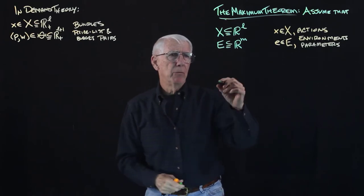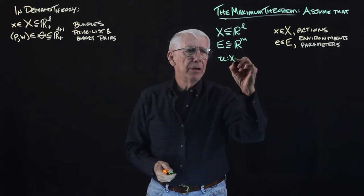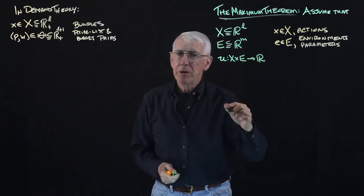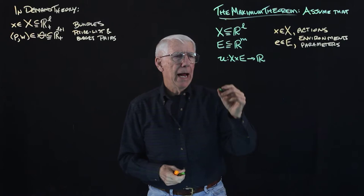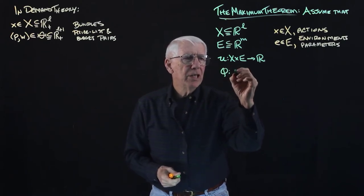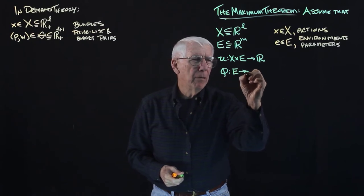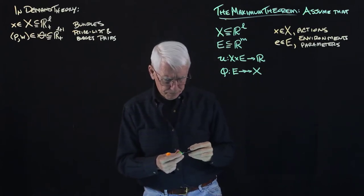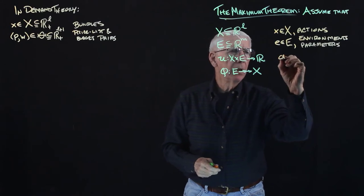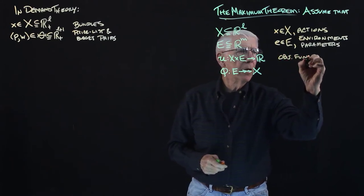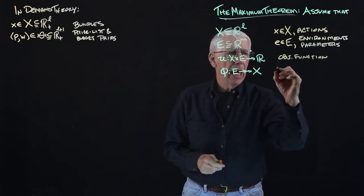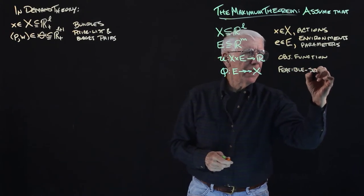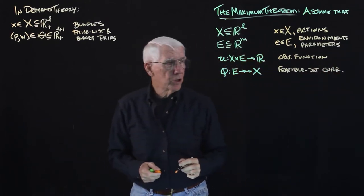The next item in the theorem is an objective function, defined with a domain of X cross E, mapping into the real numbers — an objective or utility-type function. And we have a feasible set correspondence which maps from the environments into the set of possible actions. This is the objective function and this is the feasible set correspondence.